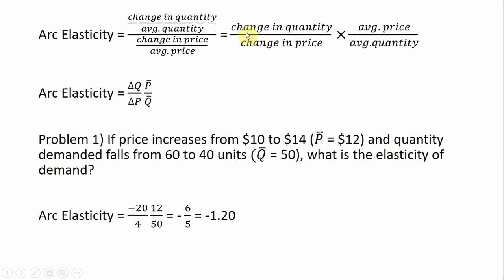In shorthand notation, the change in quantity is delta Q, the change in price is delta P, the average price I'll write as P-bar, and the average quantity I'll write as Q-bar.